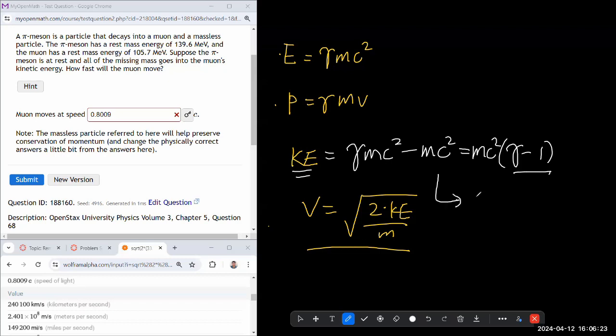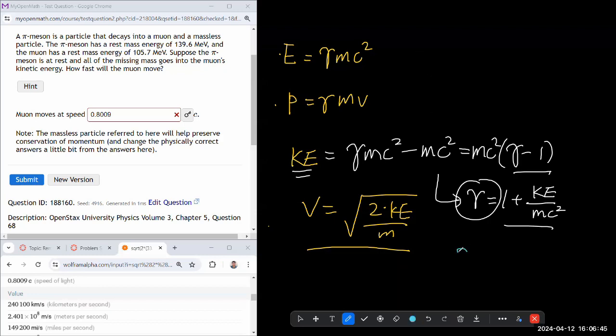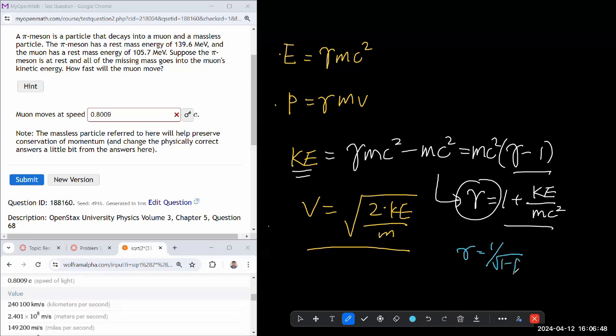So actually solving this in my head, it's going to be gamma equals 1 plus kinetic energy divided by mc squared. Now once I have gamma, it's like I have a velocity because from this formula gamma equals 1 over square root of 1 minus beta squared. I can invert it, solve it for beta and get beta equals square root of 1 minus 1 over gamma squared. So this is what I'm going to do. I'm going to first calculate gamma, get a numerical value, and then plug in here, get beta.